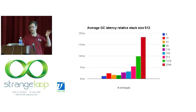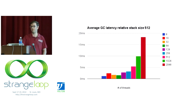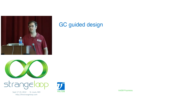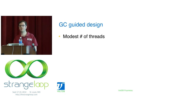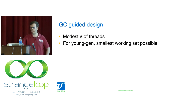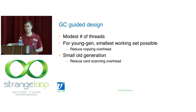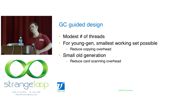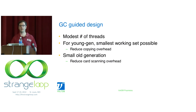Keeping stack size constant and varying thread count arrives at the same result — it's doing the same amount of work. GC-guided design means: a modest number of threads; for young generation, the smallest working set possible to reduce copying overhead; for old generation, reduce card-scanning overhead. If your strategy to avoid old-gen GC is allocating a huge old generation, you'll see that cost in young-gen collections. There's no free lunch — working set size is one of the hardest things to control.